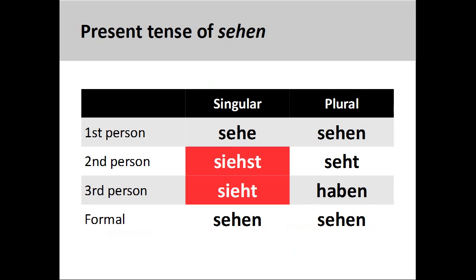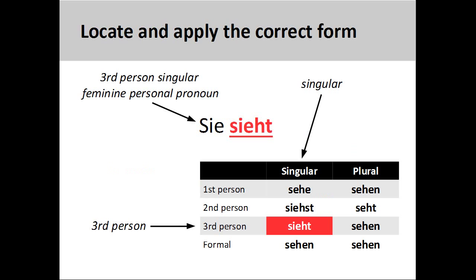The verb sehen, meaning 'to see,' is another example, this time using a strong verb. You will note that this conjugation pattern retains all the endings found in the conjugation pattern for regular verbs, but that the verb stem in the second and third person singular shows a vowel change from 'ee' to the double vowels 'ie.' The sentence sie sieht, meaning 'she sees,' shows the correct third person conjugation.